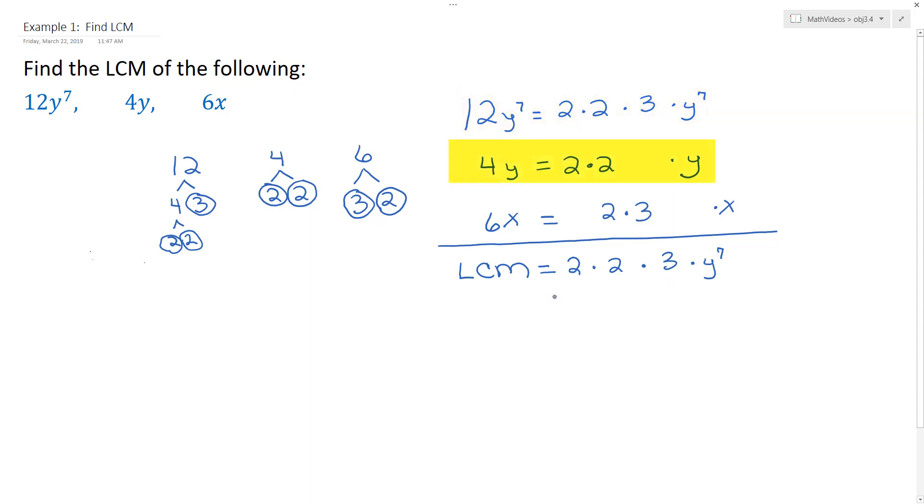And then if we look at 4y, 4y says that we need a 2, and a 2, and a y. So that's already accounted for, so we don't have to write anything additional in our least common multiple.